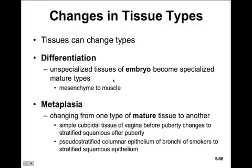In the bronchi, we normally have pseudostratified columnar epithelium. However, in smokers it converts to stratified squamous epithelium, which probably has an influence on gas exchange.